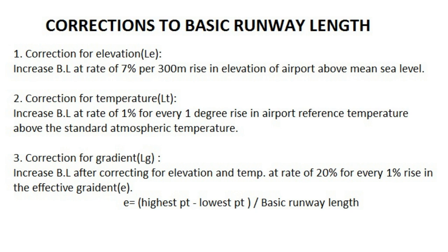The correction for elevation is given by ICAO: the basic runway length should be increased at the rate of 7% per 300-meter rise in the elevation of the airport above mean sea level. This correction is required because air density reduces as elevation increases, which in turn reduces the lift on the wings of the aircraft. Thus the aircraft will require more ground speed to become airborne, and for achieving more speed, a longer runway length will be required.